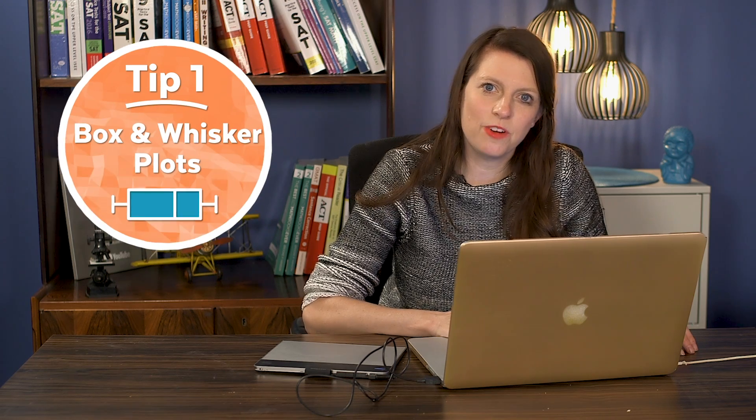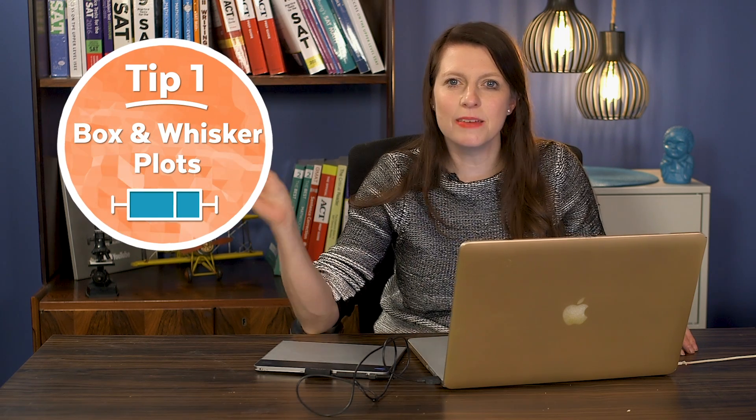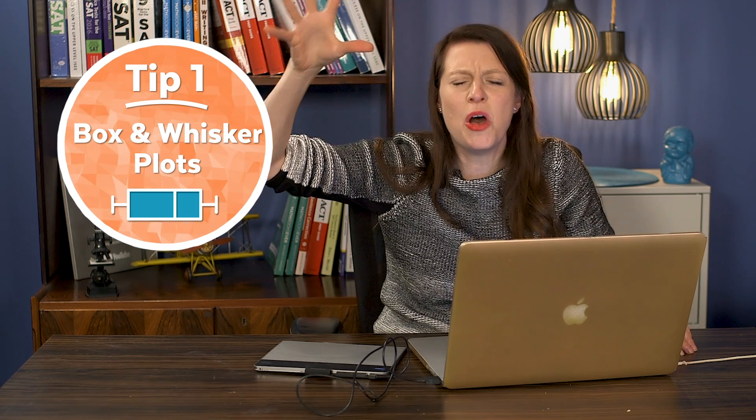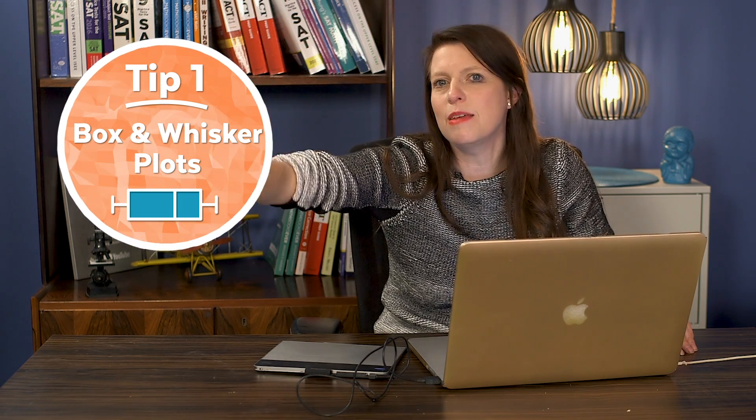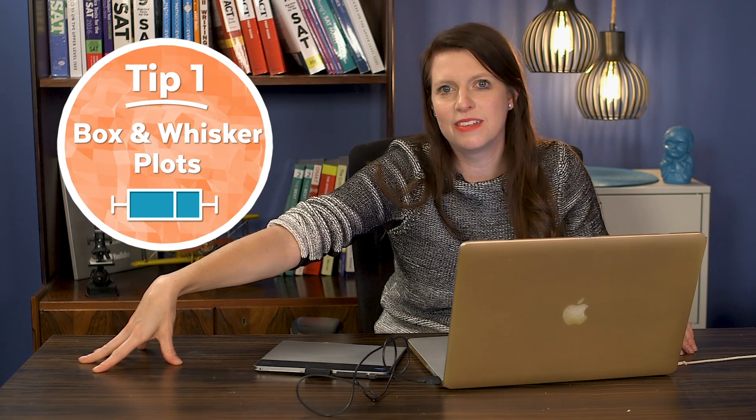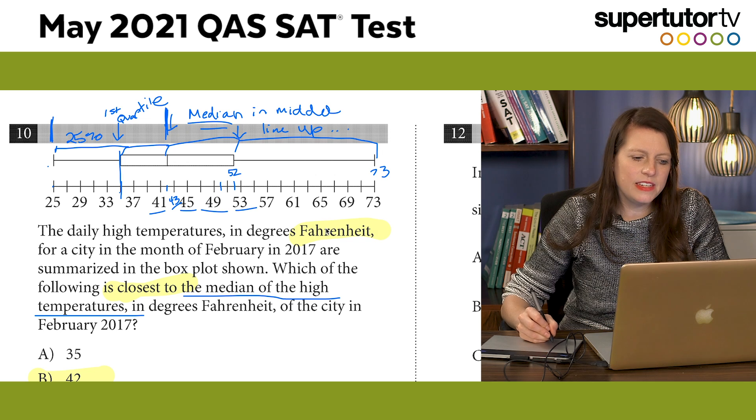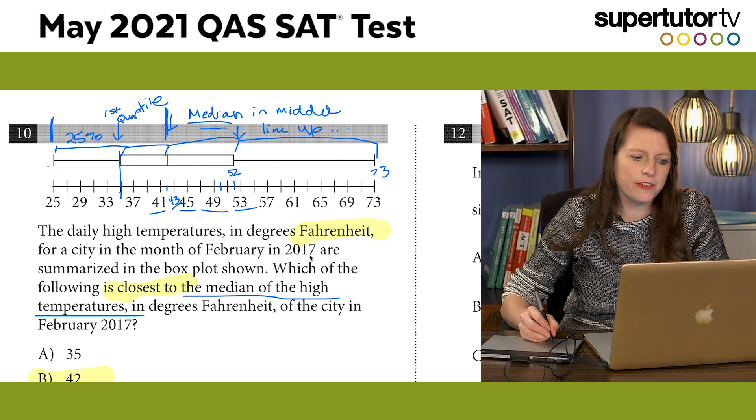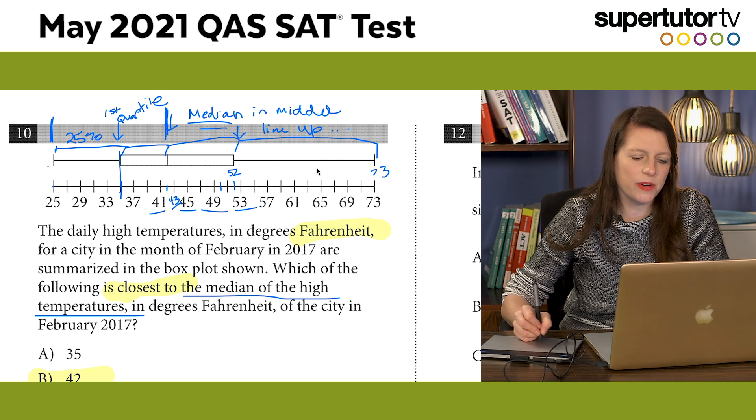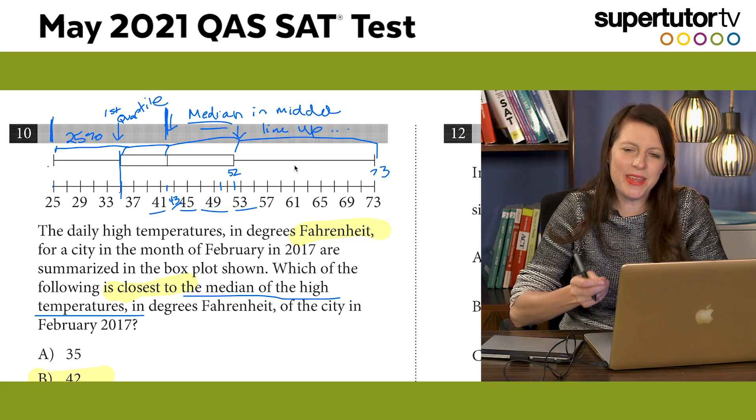And now, first tip, box and whisker plots. You don't know how many students I see missing box and whisker plots and it's so silly easy and if they had just known, if I had just talked to them for five minutes the day before their exam and told them this, they could have gotten it right. I'm gonna go over the main idea of box and whisker plots right now using a question from the May 2021 QAS SAT test. The daily high temperatures in degrees Fahrenheit for a city in the month of February 2017 are summarized in the box plot shown. So let's talk about what this box plot is and what it means.